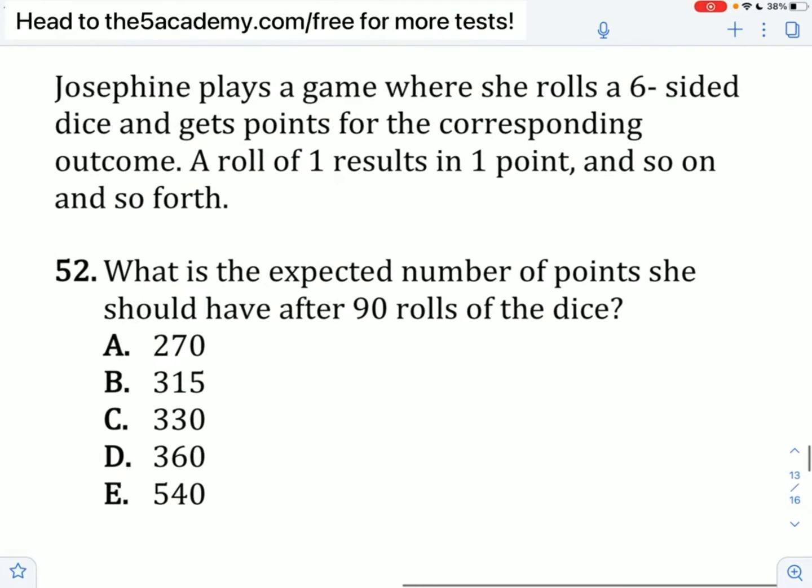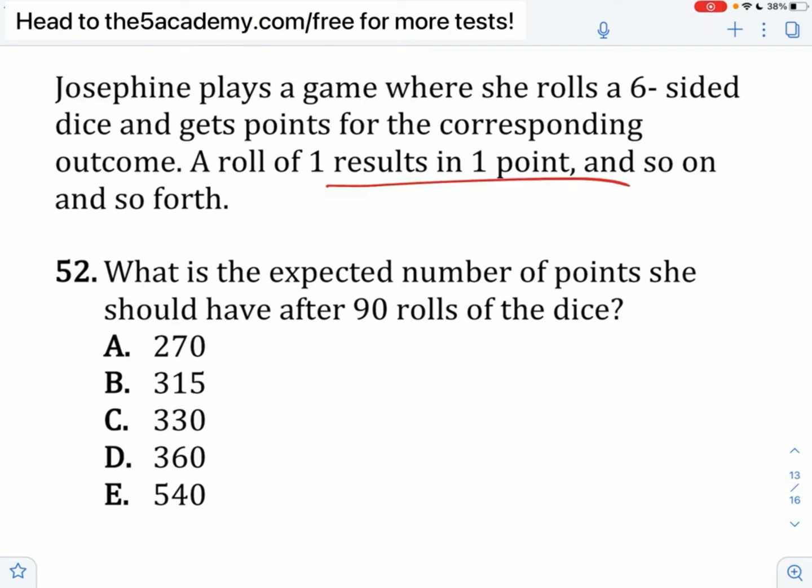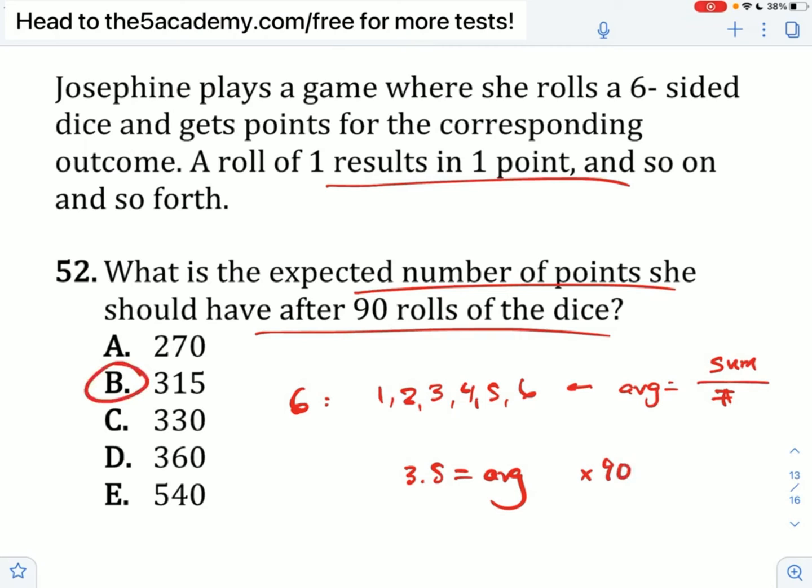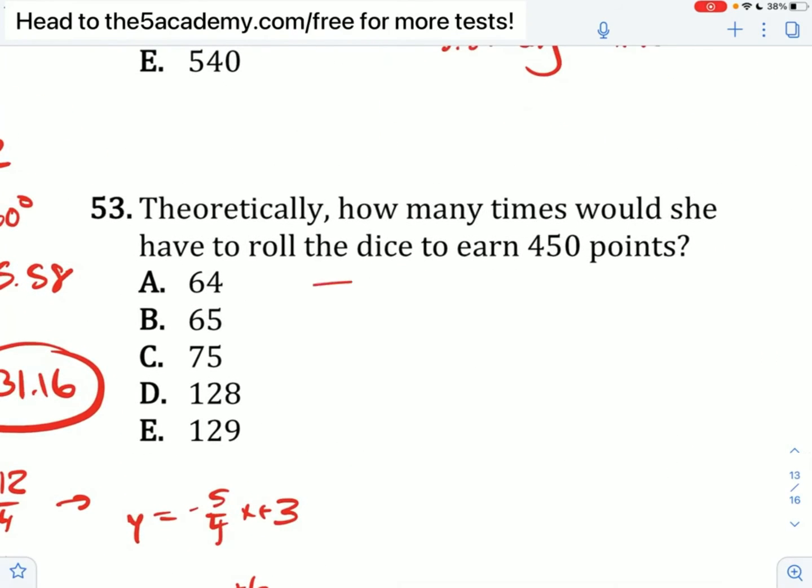Josephine plays a game where she rolls a six-sided dice and gets points for the corresponding outcome. What is the expected number of points after 90 rolls? For a large number of rolls, what's the average you would expect? If I roll six times, I'd expect to get a 1, 2, 3, 4, 5, and 6. The average is the sum divided by 6. That's 21 divided by 6, which is 7 over 2, or 3.5. You expect this on any given roll. Multiply by 90. 90 times 3.5 is 315. Theoretically, how many times would she have to roll to earn 450?